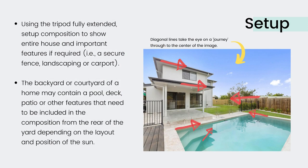Using the tripod fully extended for maximum height, position the camera where the composition shows the entire house if possible, but also shows any important features if required — for example, a secure fence, landscaping, or carport.